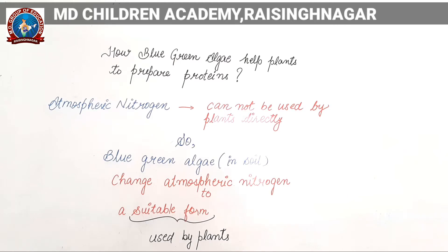In the same way, atmospheric nitrogen can't be used by plants directly. Blue-green algae is present in the soil. What does this blue-green algae do? It changes atmospheric nitrogen into a suitable form. That suitable form of nitrogen is now present in the soil. When plants absorb water through their roots, this suitable form of nitrogen is also absorbed. And then this form of nitrogen is used to prepare proteins.